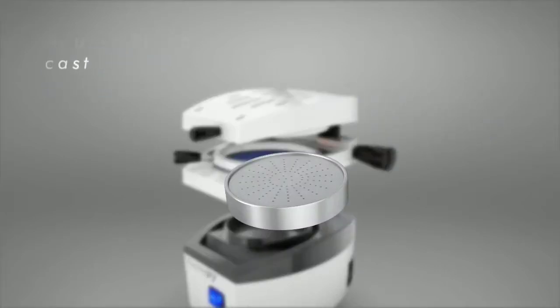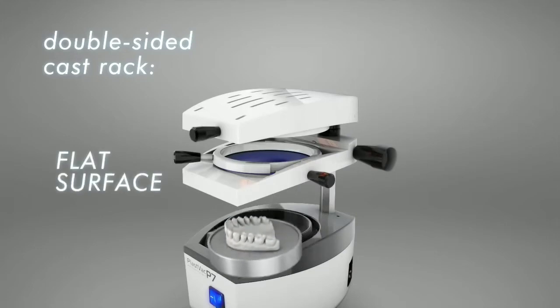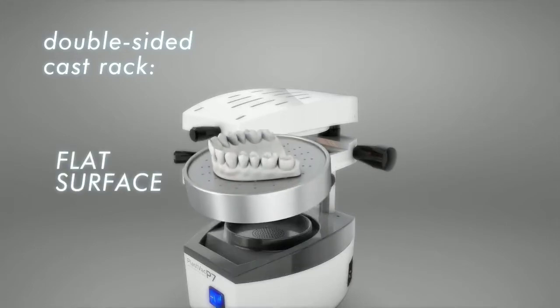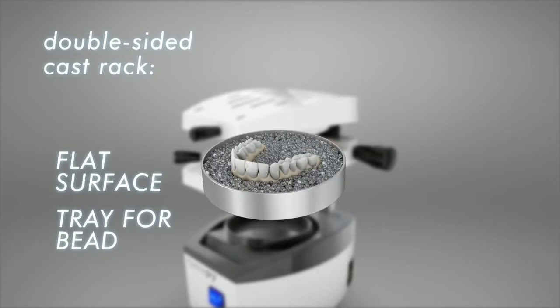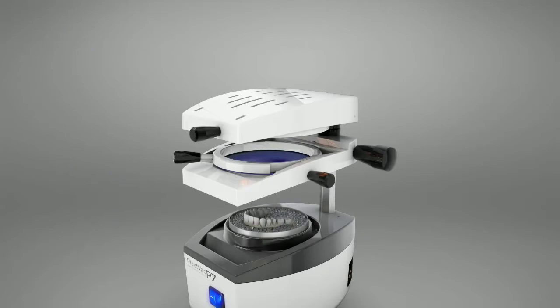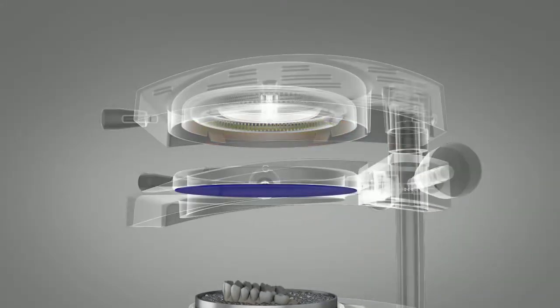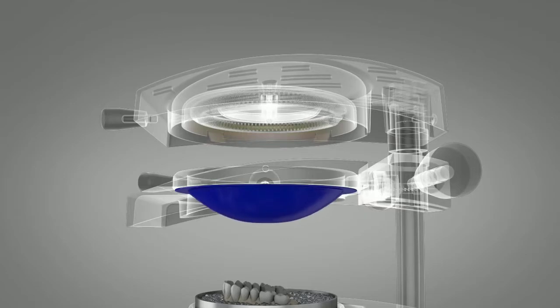It has a double-sided cast rack. The flat surface is indicated for soft sheets and casts with a good finishing. The tray for beads is indicated for hard sheets and non-finishing casts. Avoids sheets distortion, increases the airflow and facilitates the cast removal, avoiding cast breaking.